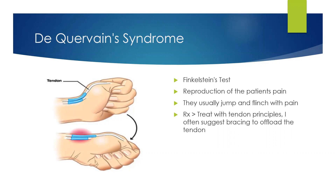I approach these just by treating them with normal tendon principles. I often suggest bracing as well to offload the tendon. I love isometrics with elastic bands — a rubber band around the fingers and the thumb, just holding that — and then going into more movements as well.